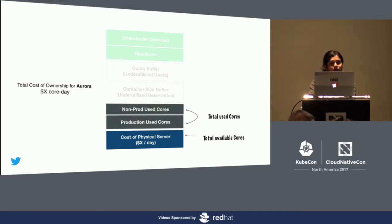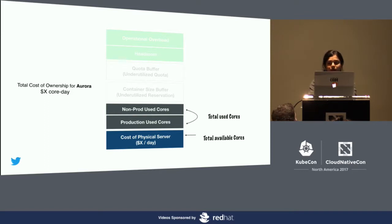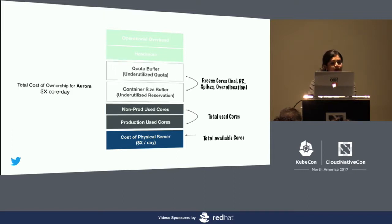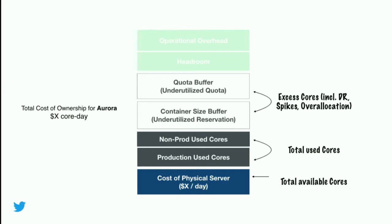Next, we looked at the total used cores in Aurora. This is a combination of both cores used by production and non-production jobs. We use the default container stat metrics exported by Mesos. We then account for excess cores that are due to incorrect container sizing and extra quota allocated to account for traffic spikes. The goal here is to incentivize folks to right-size their jobs and ensure they are requesting enough quota, and if possible, tax them for holding excess cores.